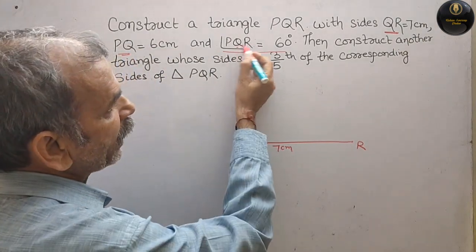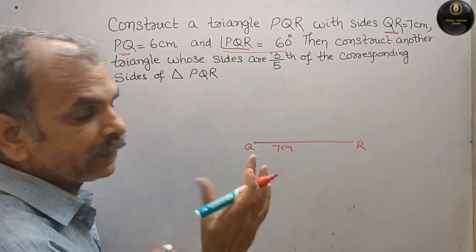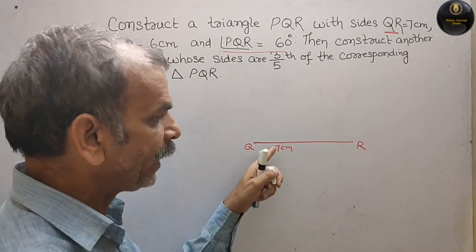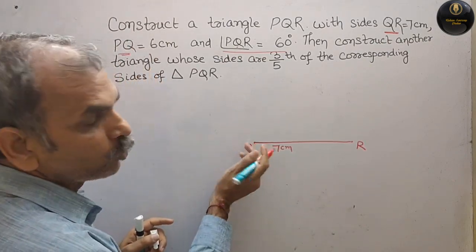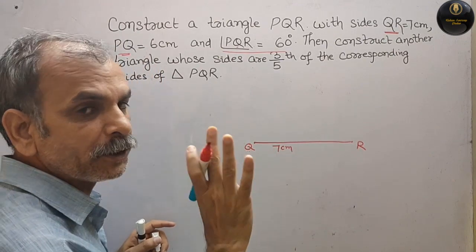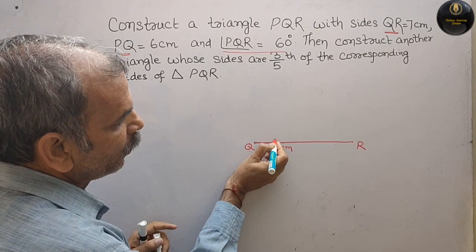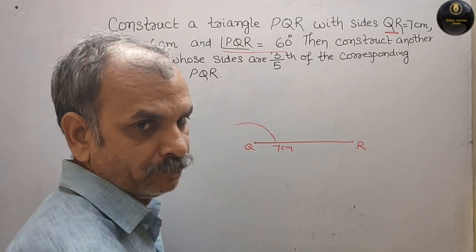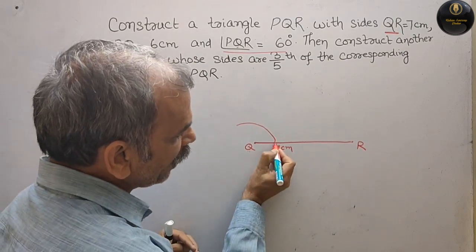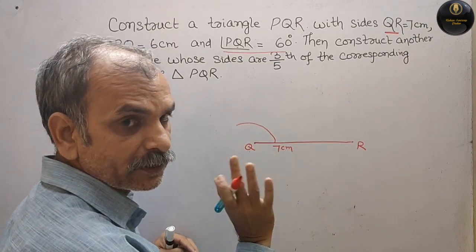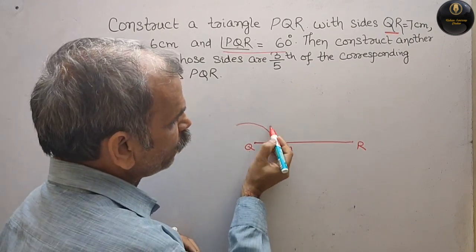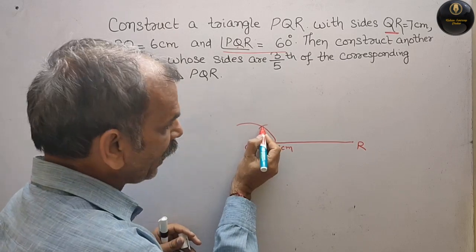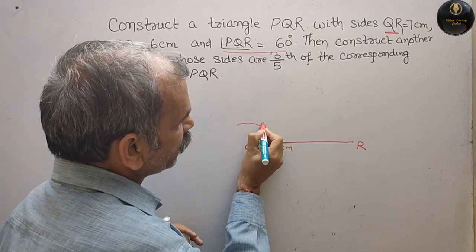फिर आपको angle बनाना है — 60 degree at Q. देखो, center में Q है, यहाँ पर आपको 60 degree बनाना है। तो उसके लिए पहले एक arc बनाएंगे from Q — take any measurement on compass, कोई भी measurement। और एक arc बनाएंगे like this। फिर यह वाले point में same measurement, change नहीं करना है, यहाँ रखे — you have to make an arc like this। अब Q और इस point से एक line खींचनी है like this।